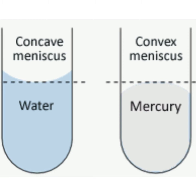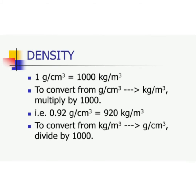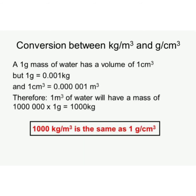Do you remember the conversion between kilogram per meter cube and gram per centimeter cube? One kilogram per meter cube is equal to one-thousandth gram per centimeter cube. One gram per centimeter cube is equal to one thousand kilogram per meter cube. These are the important formulas to do the numerical questions.